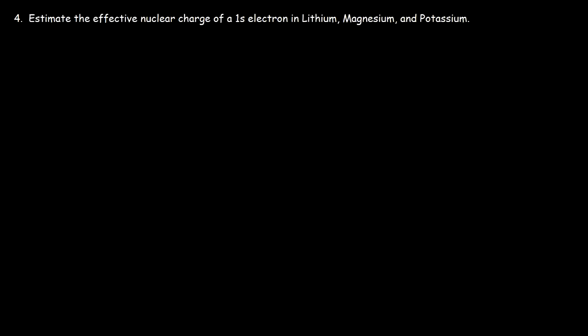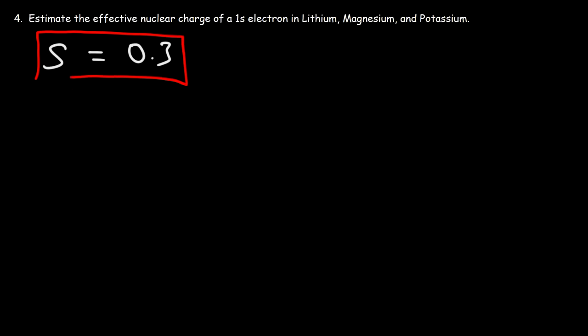This is going to be the last example. We're going to estimate the effective nuclear charge of the 1s electron in three different elements: lithium, magnesium, and potassium. When dealing with the 1s electron, S will simply be 0.3. This gives an accurate answer for light elements, but when dealing with heavier elements, the estimation will not be as accurate.